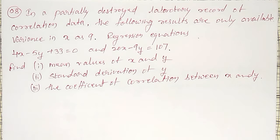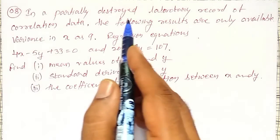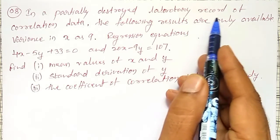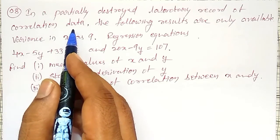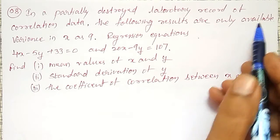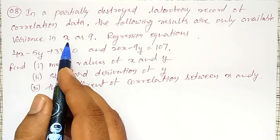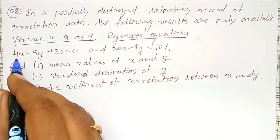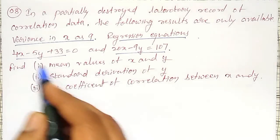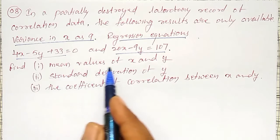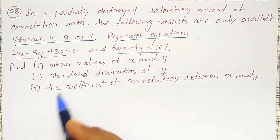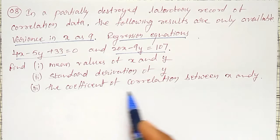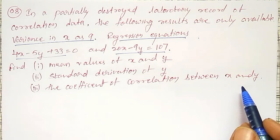A simple example on regression lines - from that, how to find out x bar, y bar, and standard deviations. In a partially destroyed laboratory record of correlation data, the following results are only available. Variance in x as 9 and the regression equations are available. From this data, I have to find out the mean value of x and y,